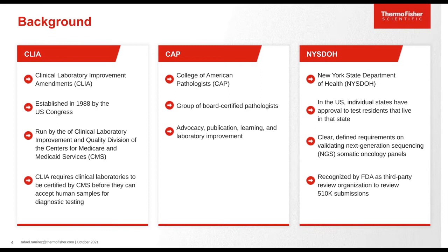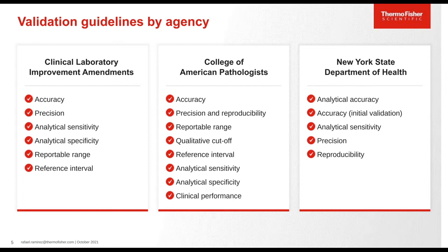Let's line up each accrediting agency and talk about their specific guidelines. From CLIA, they cover all high complexity laboratory experiments needed in a validation: accuracy, precision, analytical sensitivity, specificity, reportable range, and interval. CAP includes all those previous high complexity experiments plus additional requirements such as quality cutoffs and clinical validation performance. New York State includes all of the previous experiments but has more specific requirements within each experiment type that need to be met.